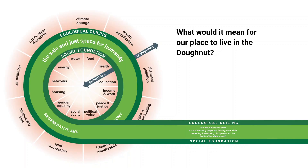The starting point is to unroll the donut so that we have some space between the social foundation and the ecological ceiling to explore what it would mean for your place to achieve local aspirations — to be thriving people in a thriving place — and to respect global responsibilities to safeguard the well-being of all people and the health of the whole planet.